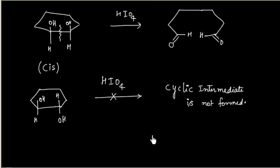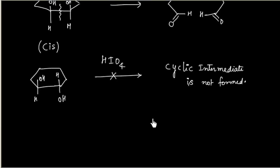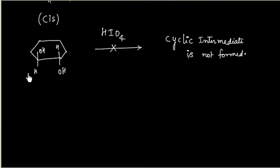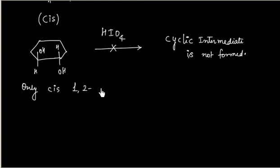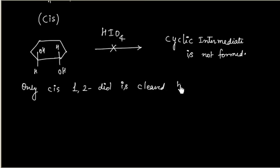So only cis 1,2-diol is cleaved by HIO4.